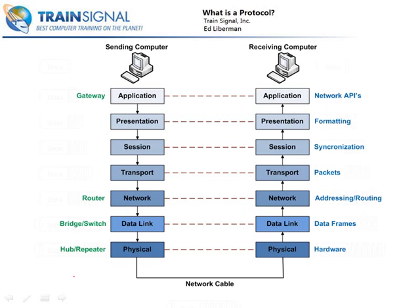Coming back to our reference guide, you'll see there is one part we haven't covered yet — over here on the left where I've written in the names of certain network devices, and I've put them with their corresponding OSI model layer in which they have functionality. We're not going to go into the details of these devices in this particular video — that's something we'll cover later on — but I wanted you to have a reference point with regards to the OSI model.